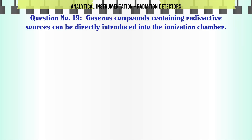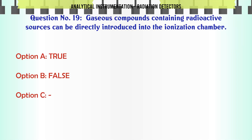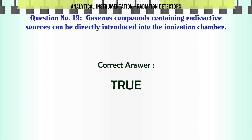Gaseous compounds containing radioactive sources can be directly introduced into the ionization chamber. A. True. B. False. The correct answer is True.